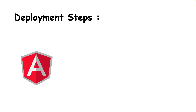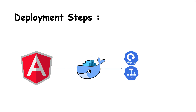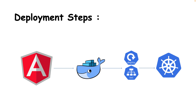First we need to create an Angular application, then we will build a Docker image of that Angular application using a Dockerfile. Once our Docker image is ready, we need to deploy our application to the Kubernetes cluster. For that, we need to create a deployment and service object in Kubernetes. With the deployment object, we tell Kubernetes to pull our Angular Docker image and run it inside Kubernetes pods. Similarly, by creating the service object, we inform Kubernetes to expose our application outside of the Kubernetes cluster. These are the same basic steps we follow when deploying a Spring Boot application to Kubernetes.